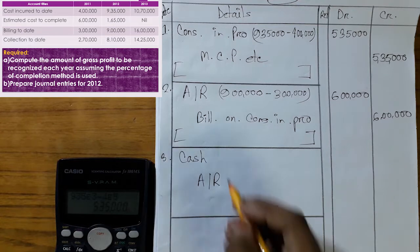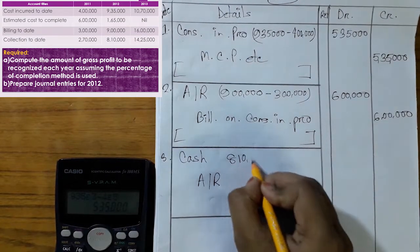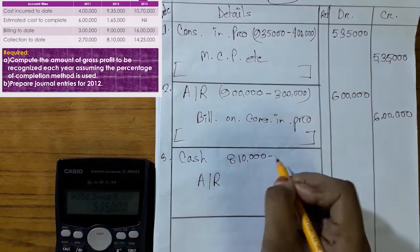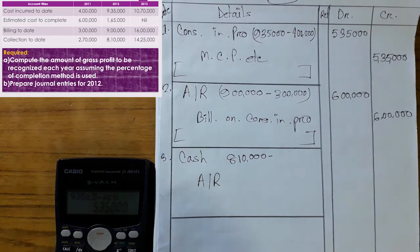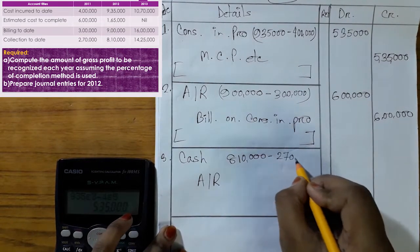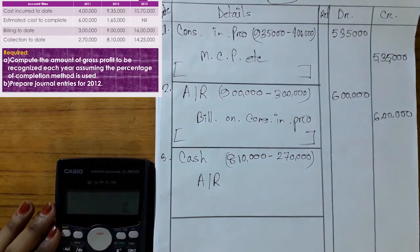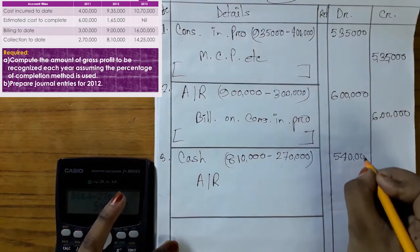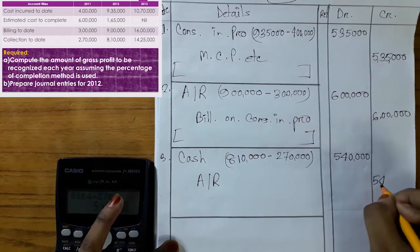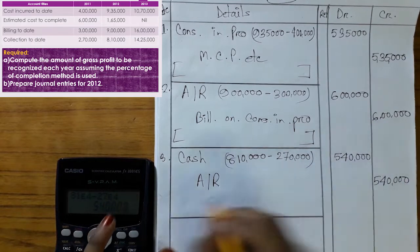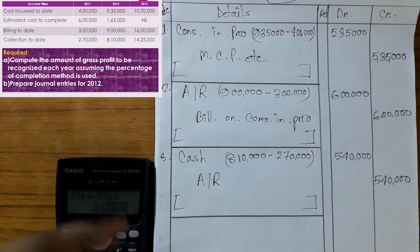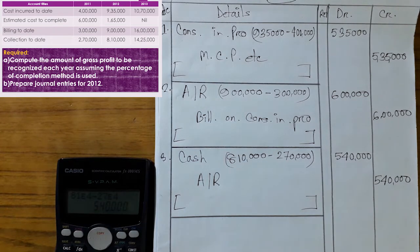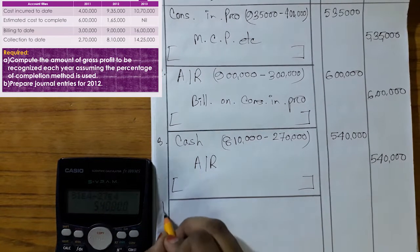Cash collection entry: billing for the period is 2,00,000. Cash debit 2,00,000; Accounts Receivable credit 2,00,000. This records the cash collection or cash receipt for the period.